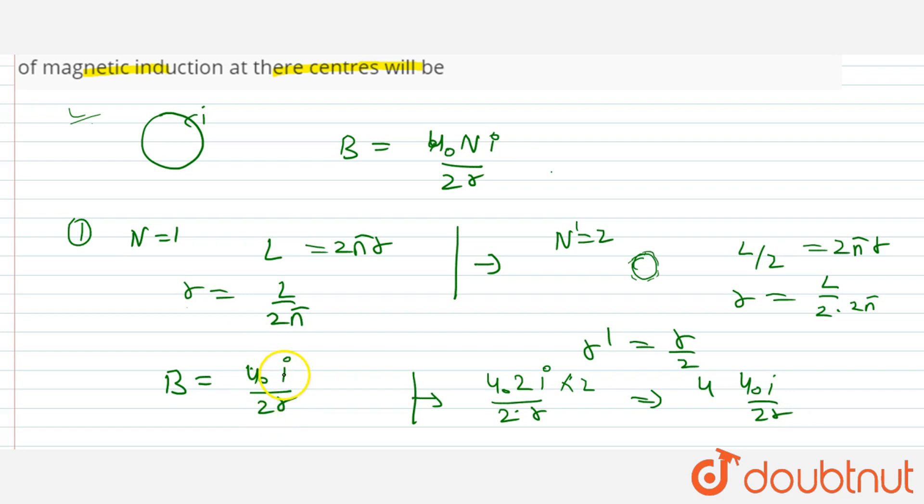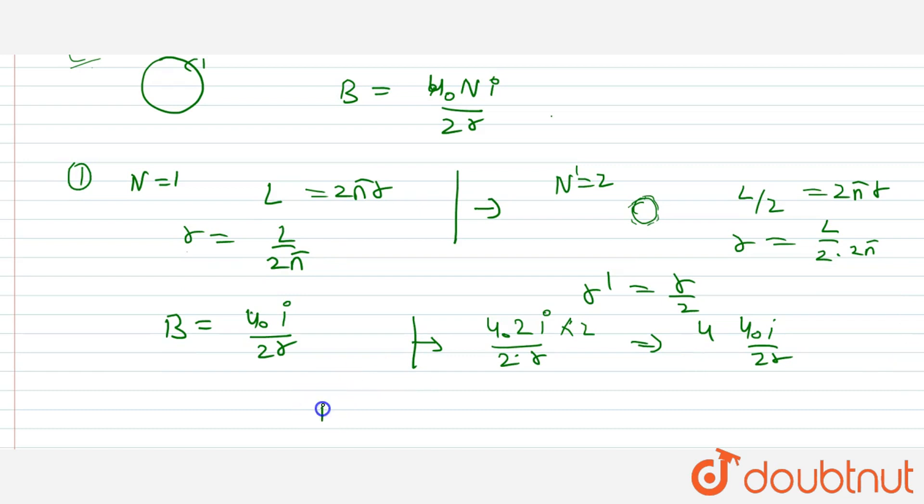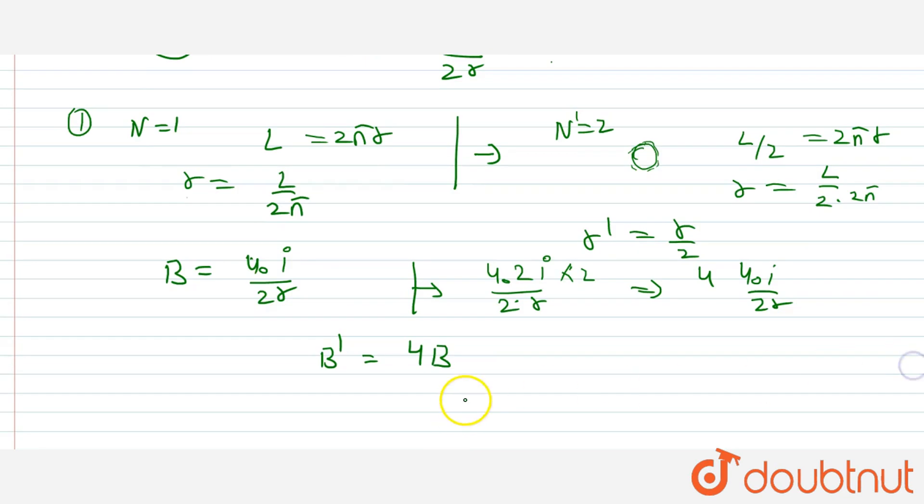So our B dash is 4 times of B. So our ratio is 4 to 1.